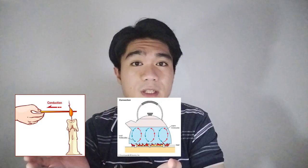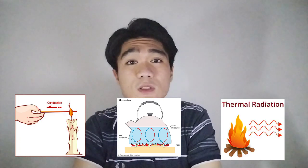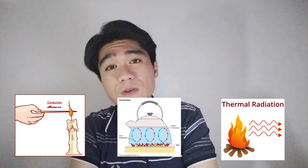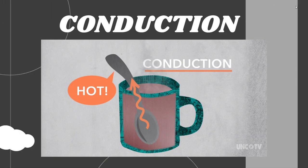Heat transfer has multiple modes by which heat energy is transferred from one medium to another, namely conduction, convection, and radiation. Starting with conduction: it is a process by which heat energy is transmitted through collisions between neighboring atoms or molecules. Conduction occurs more readily in solids and liquids, where particles are closer together, than in gases, where particles are further apart.